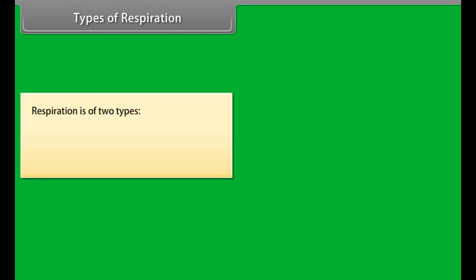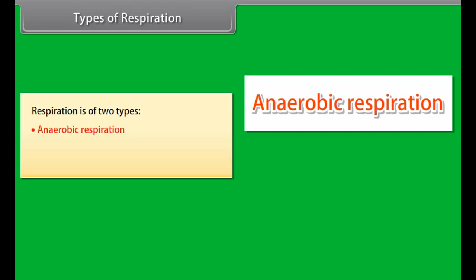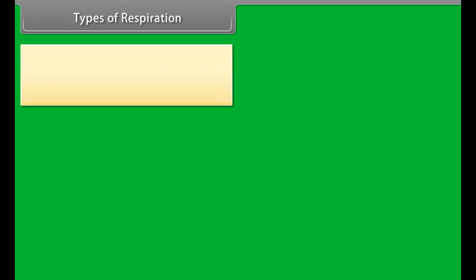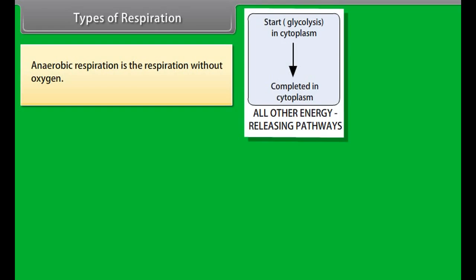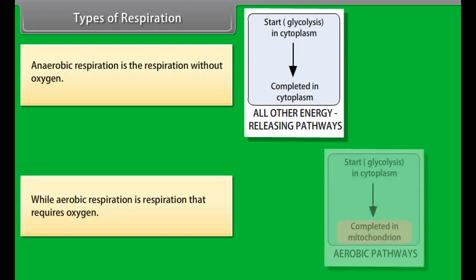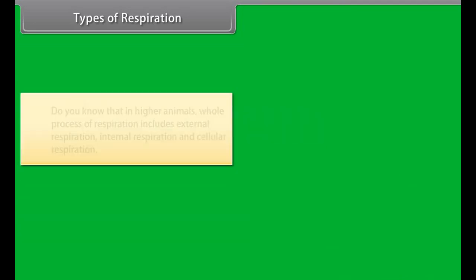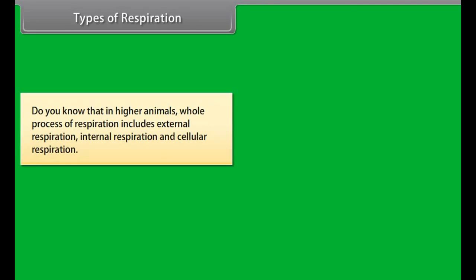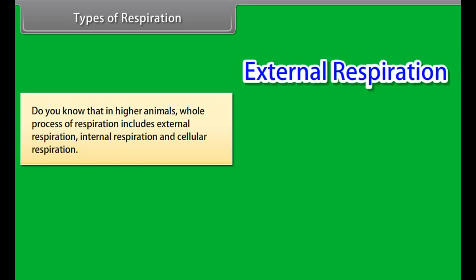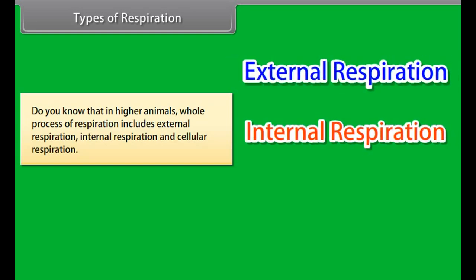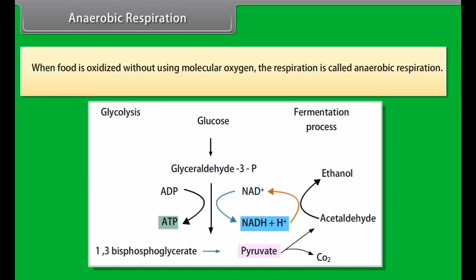Respiration is of two types: anaerobic respiration and aerobic respiration. Anaerobic respiration is respiration without oxygen, while aerobic respiration requires oxygen. In higher animals, the whole process of respiration includes external respiration, internal respiration, and cellular respiration.